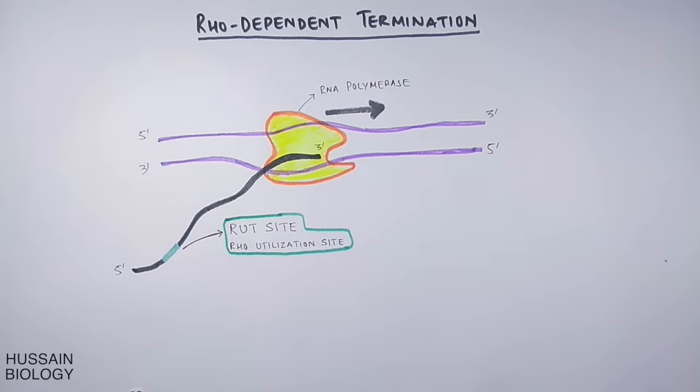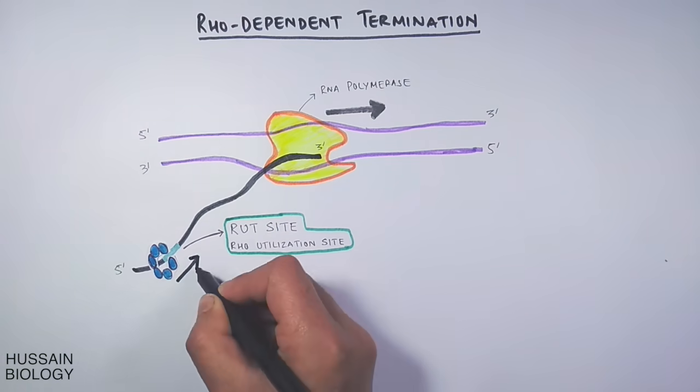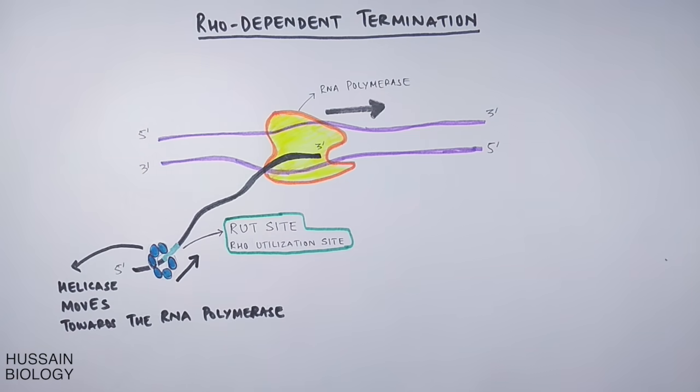To this rut site, the rho helicase protein binds and starts moving towards the transcription machinery—RNA polymerase—as shown in the animation. It must be noted that this helicase uses energy from ATP hydrolysis.